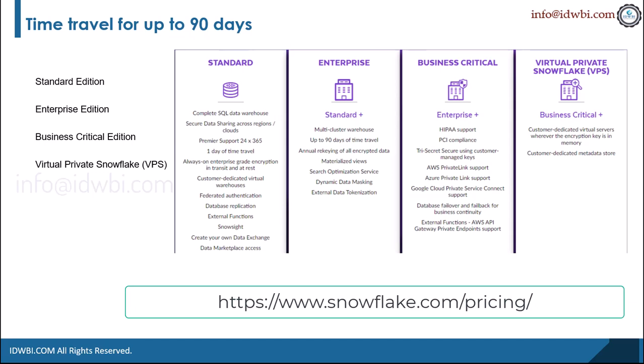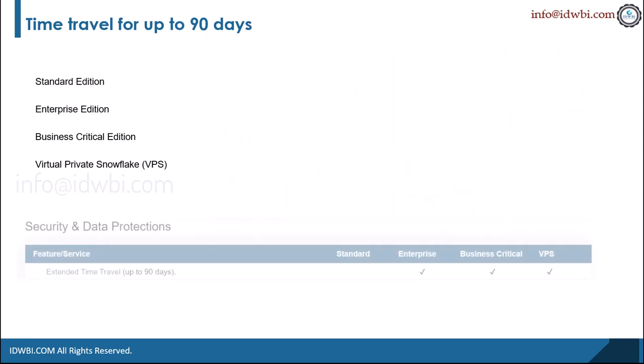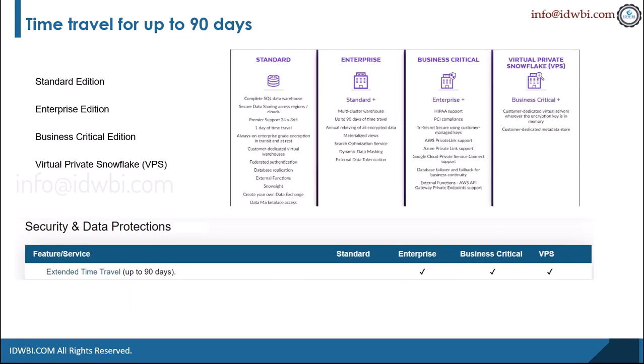Coming back to the question — time travel for up to 90 days. Which edition provides time travel for up to 90 days? As you can see, the Enterprise edition, Business Critical edition, and the Virtual Private Snowflake edition can give you extended time travel for up to 90 days.